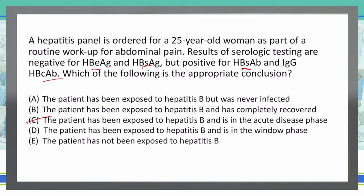I also saw that A was 'never infected.' Well, I know that they've been infected because they have the antibodies, so I'll take A out. That leaves someone that's completely recovered, in the window phase, or never been exposed. If they've never been exposed, they wouldn't have antibodies, so E is out.